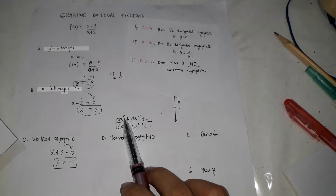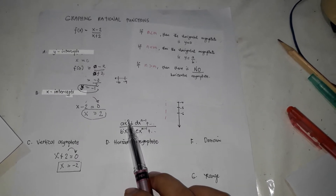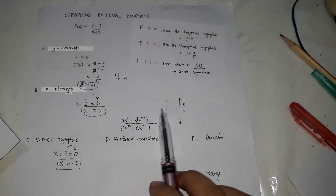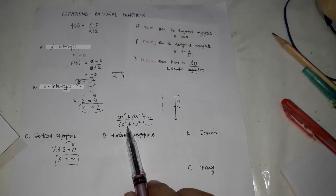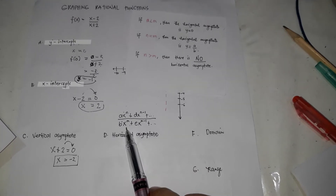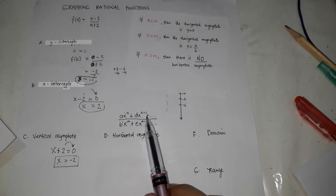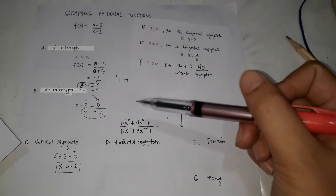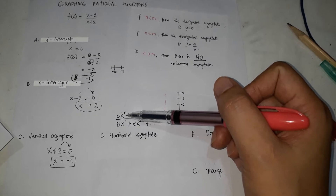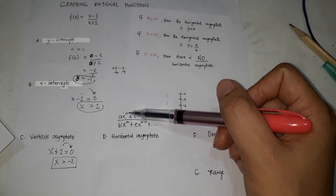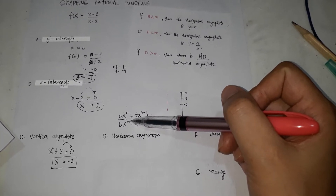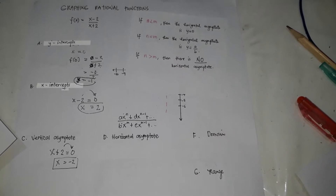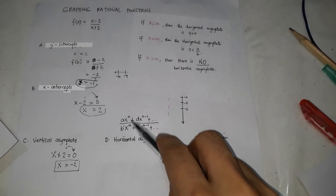Here, n is the degree of the polynomial in the numerator — the highest exponent — while m is the degree of the denominator. The degree is the highest exponent. So n and m are those values.